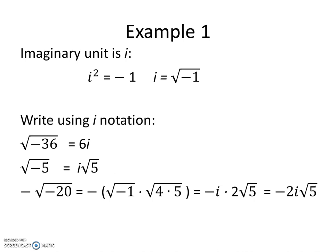They ask us to write using i notation. If we have the square root of negative 36, we know the square root of 36 is 6, and the square root of negative 1 is i, so it is 6i. When we have the square root of negative 5, the square root of 5 stays, and the negative 1 comes out as i, so we have i times the square root of 5.